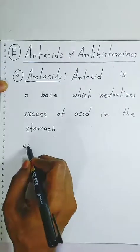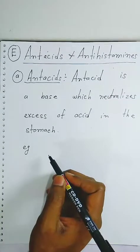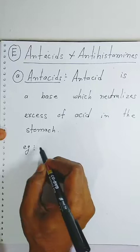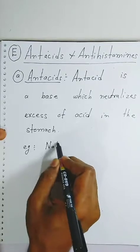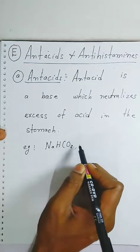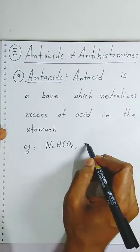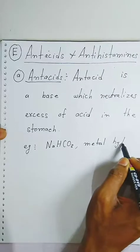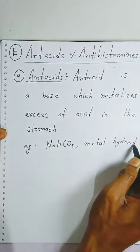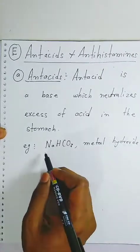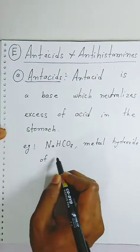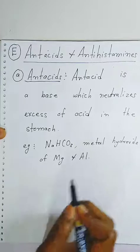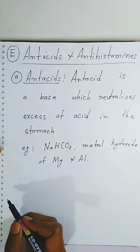Which are the bases used? First, you know sodium bicarbonate, which we eat. And metal hydroxides — any metal hydroxide, like aluminium hydroxide and magnesium hydroxide, can be taken as anti-acids.